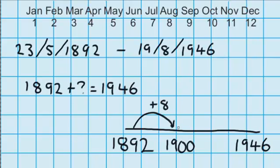And now that I'm at 1900, it's really easy for me to jump all the way up to 1946. I can see from 1900 to 1946, that's a jump of 46, which means I jumped up 8 and I jumped up another 46, which means in total I jumped up 54.